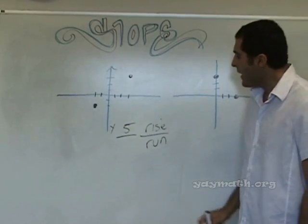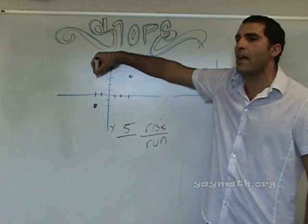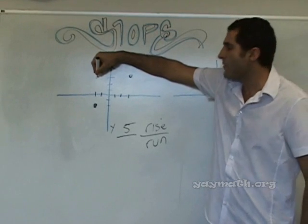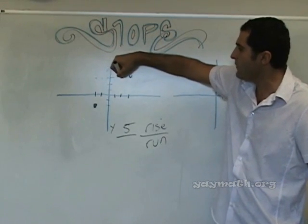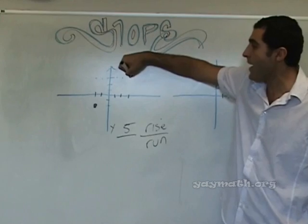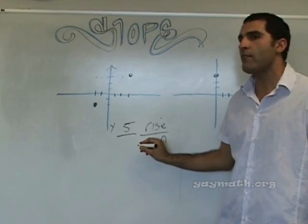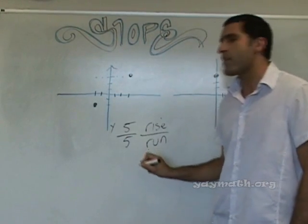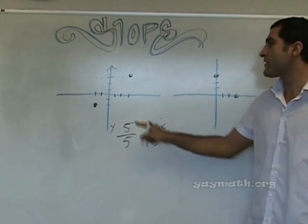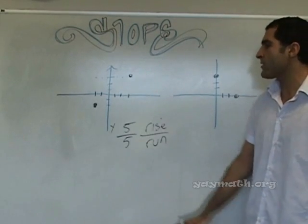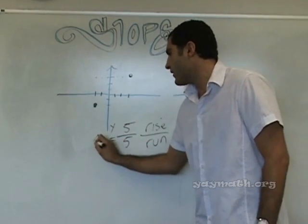And now, run. I'm over here currently — which way do I go, right or left? Right. How many? One, two, three, four, five. Positive five, because we're going to the right. What is this slope then? Five over five equals one. So this is a slope of one.